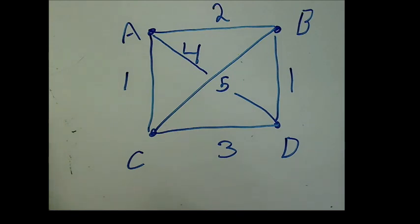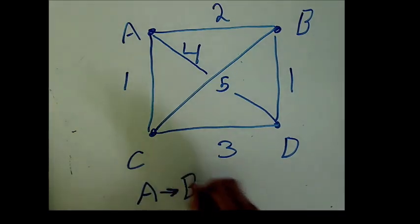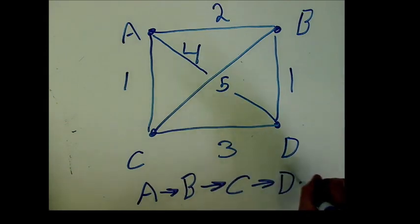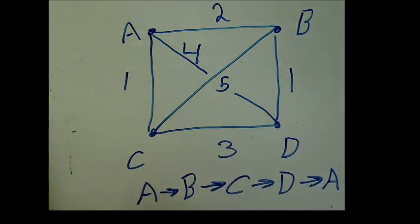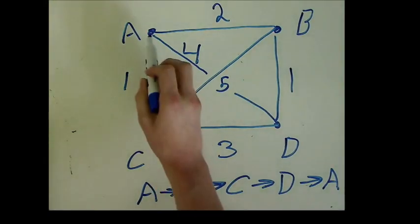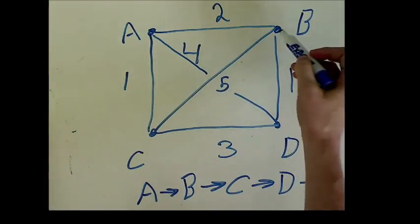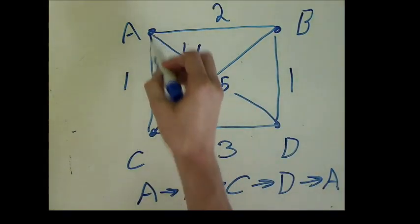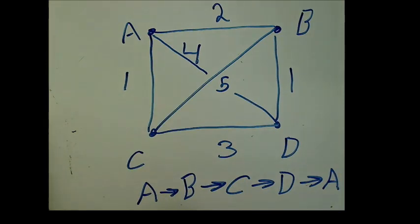So for example, a path could look like this. Starting at A, then going to B, then going to C, then going to D, and back to A. In this case, our total length will be 2 plus 5 plus 3 plus 4. And it's pretty obvious that this will not be the best path. So how do we find the best path?